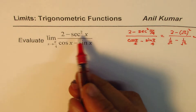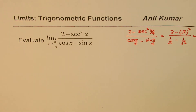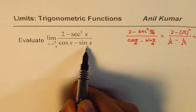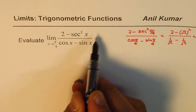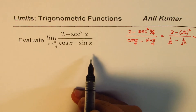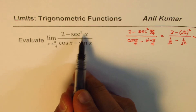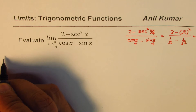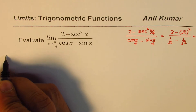We need to simplify and solve. In such questions, whenever you have cos x minus sin x, it is a good idea to rationalize. And secant can be written as 1 over cos. So that should help us simplify this expression.